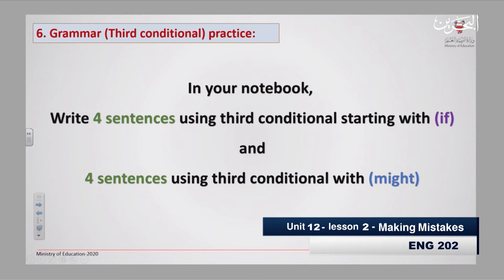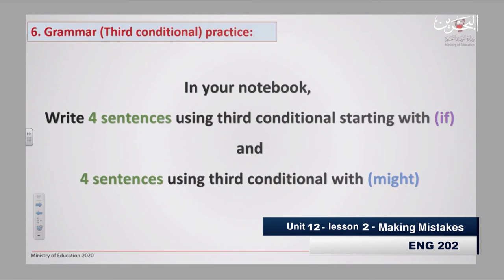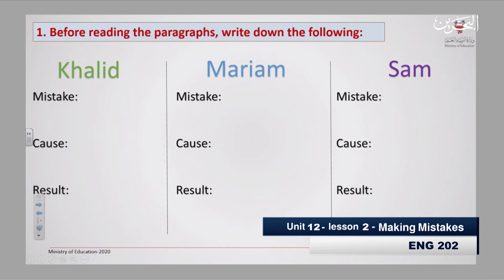Now, in your notebook, write four sentences using the third conditional starting with 'if,' and four sentences using the third conditional with 'might.' Now we will move to the reading part. Before reading the paragraphs, write down the following in your notebook.